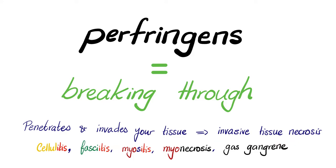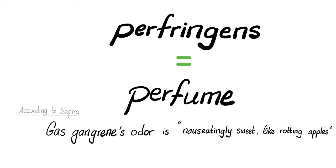What do we mean by invasive tissue necrosis? We start with cellulitis, fasciitis, myositis, dig deeper — myonecrosis, gas gangrene, bacteremia, septicemia, bleeding, hemolysis — you name it. A Medicosis way of thinking about it: perfringens equals perfume. It's probably true that we call it perfume because it perforates through the air. It might not be very technical, but it's going to help you remember.